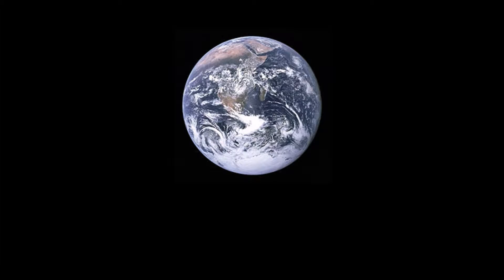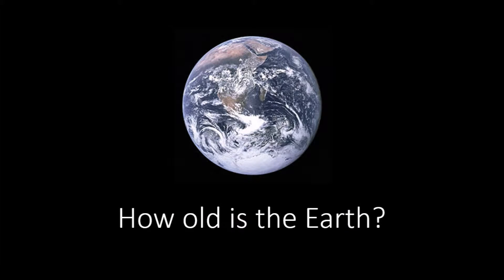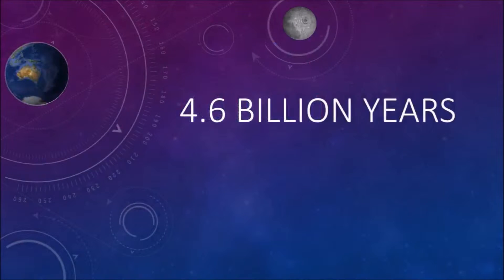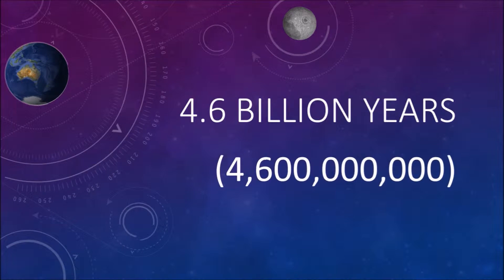Have you ever thought about how old the Earth is? This planet we live on hasn't been around forever, but it's still incredibly ancient. It is actually 4.6 billion years old — that's a 4, then a 6, then 8 zeros. It's a lot of time.